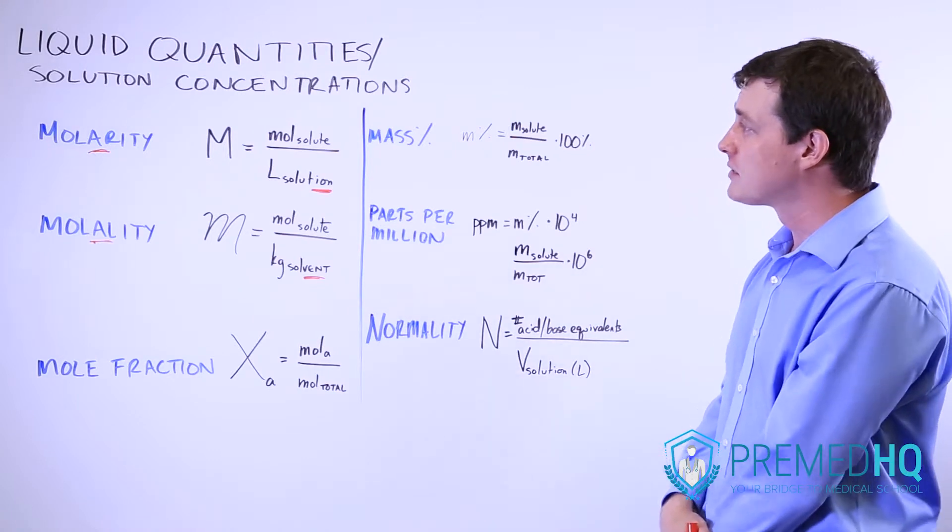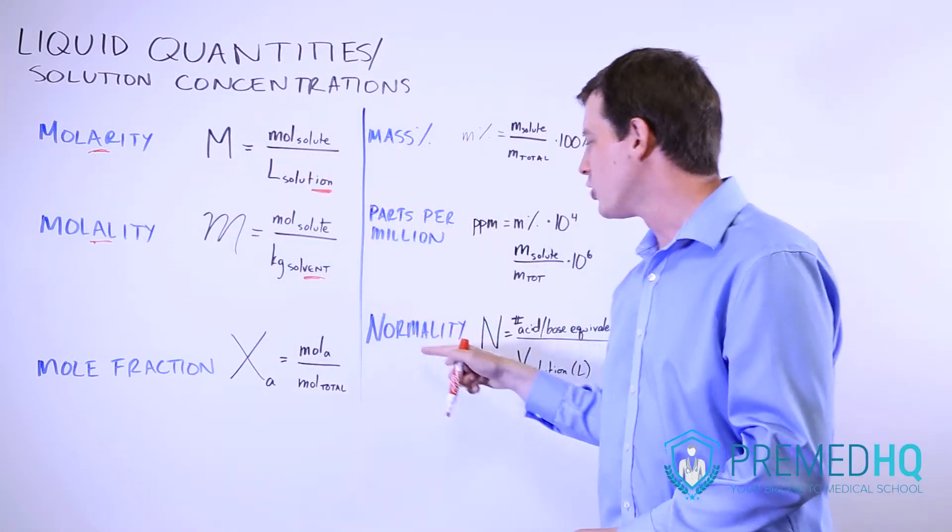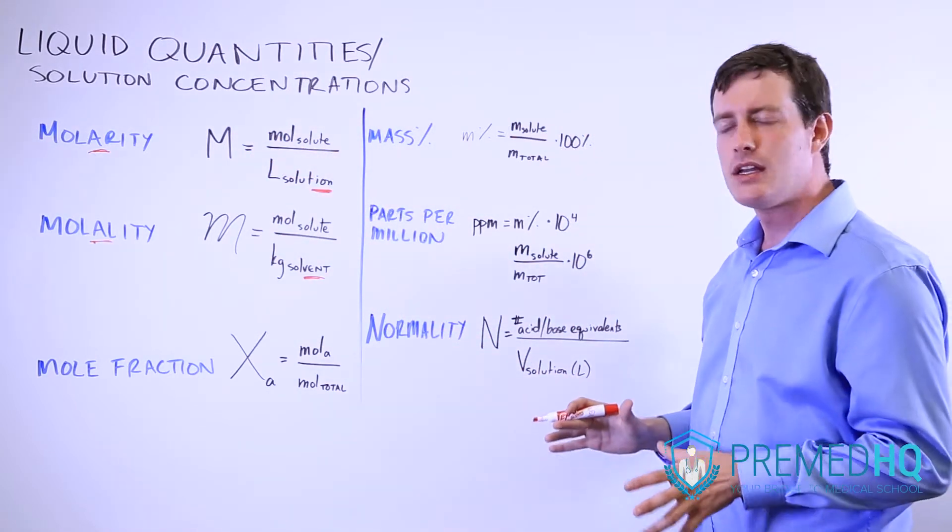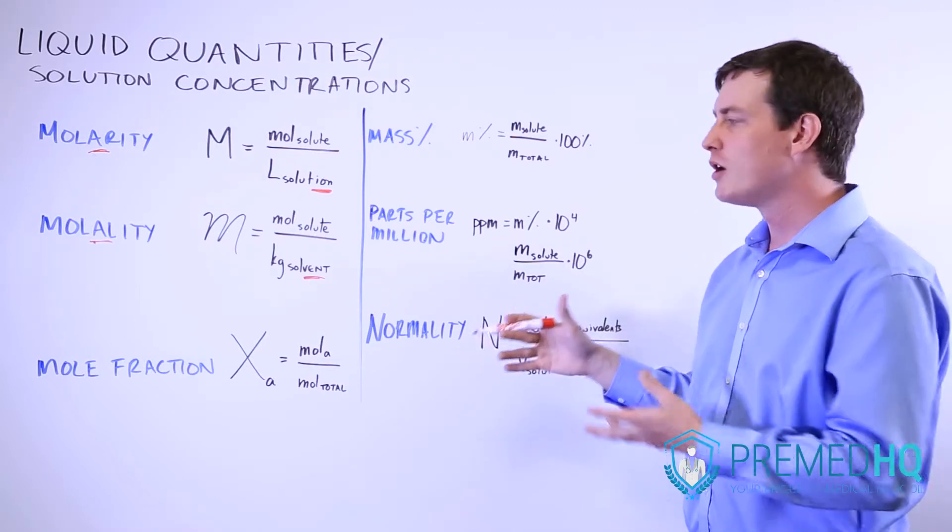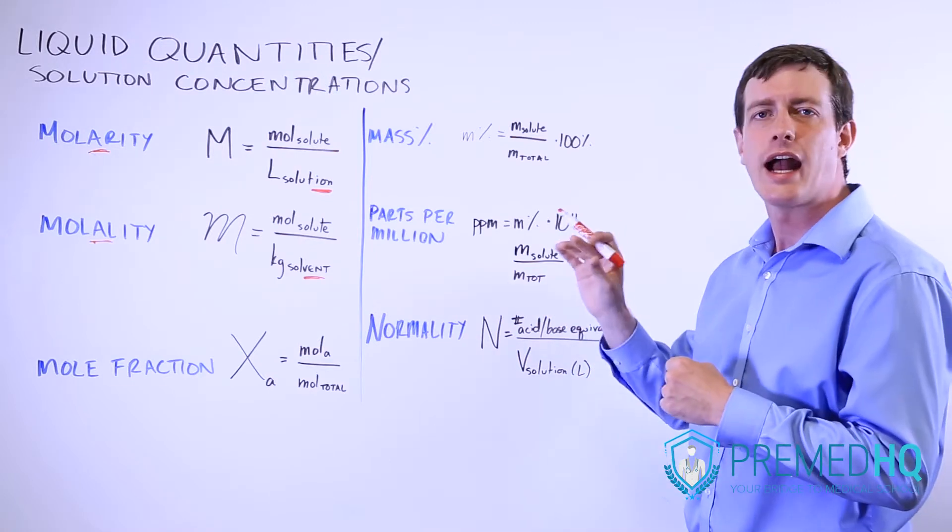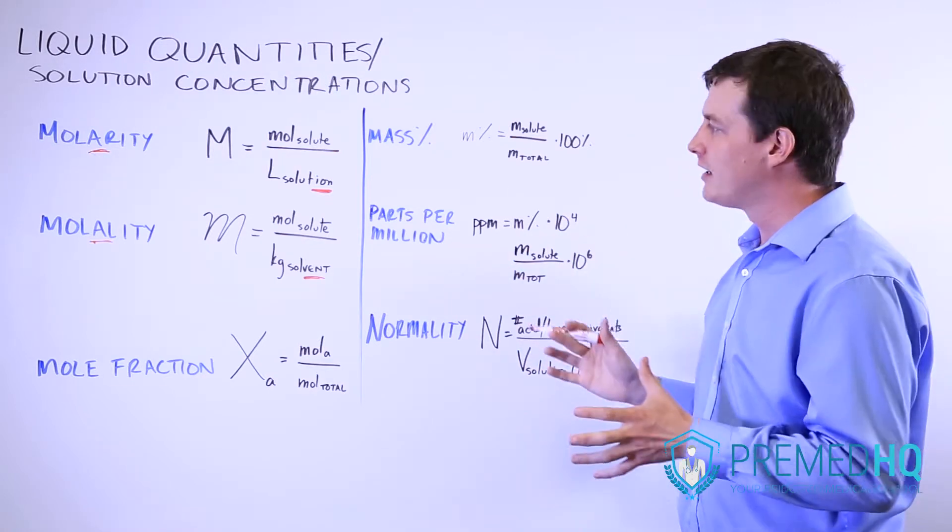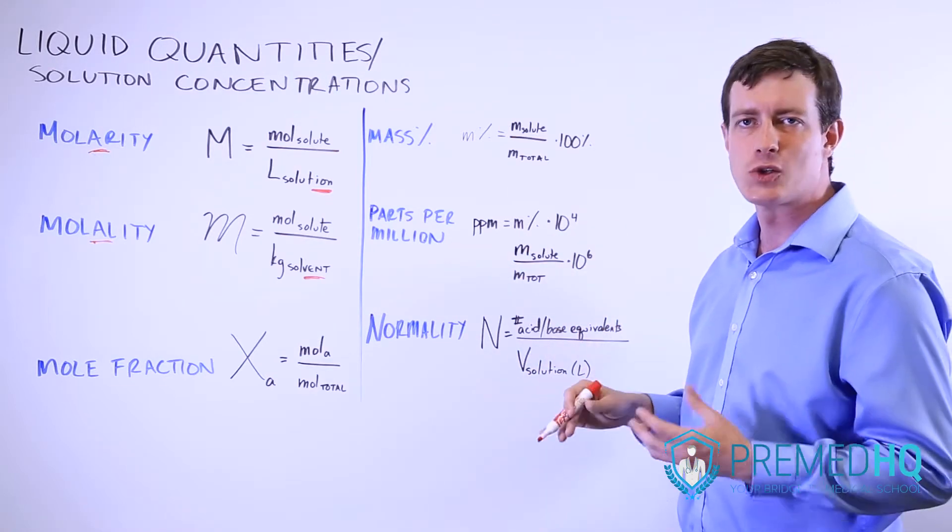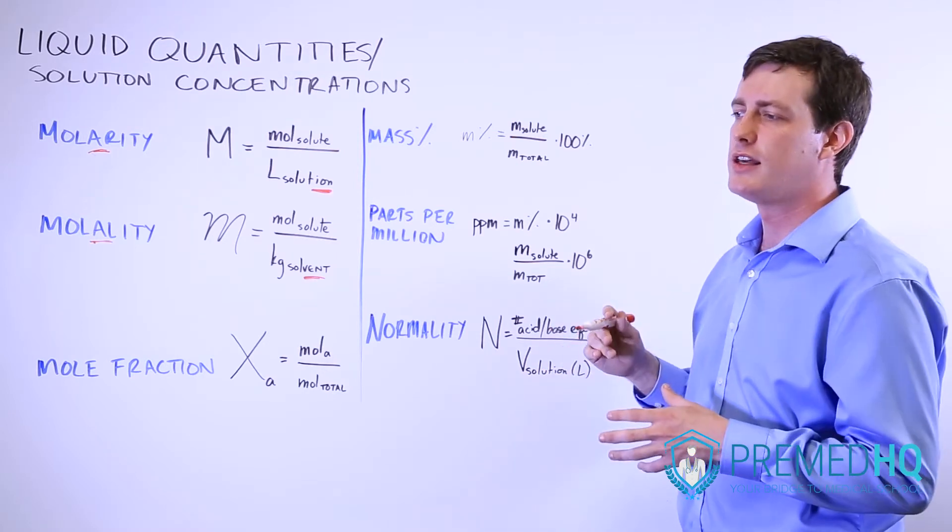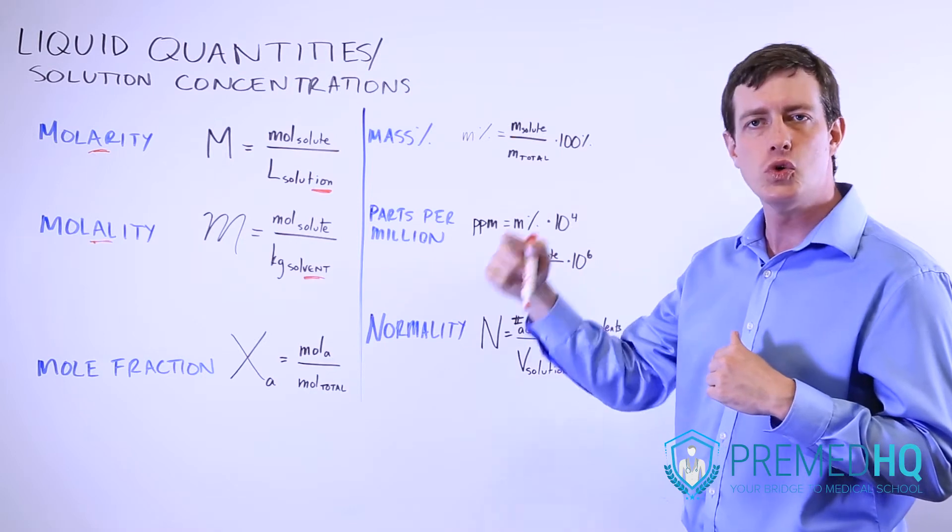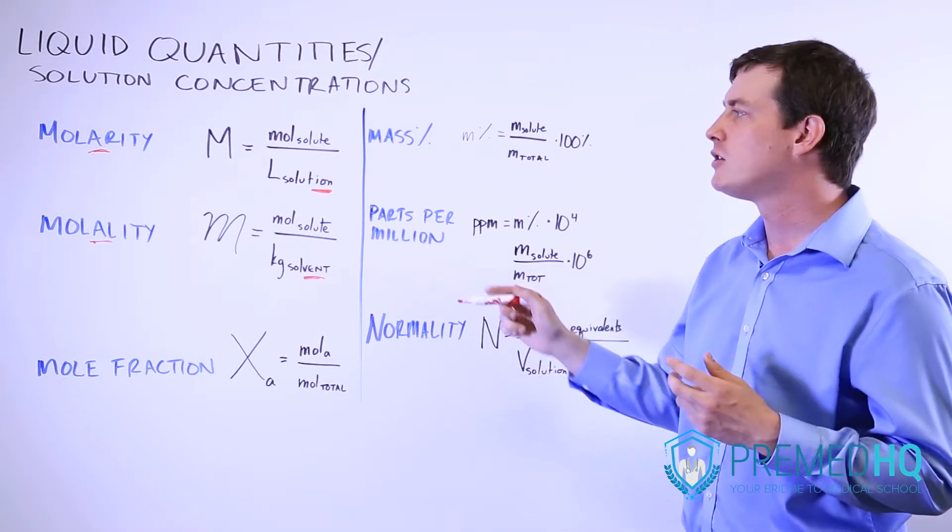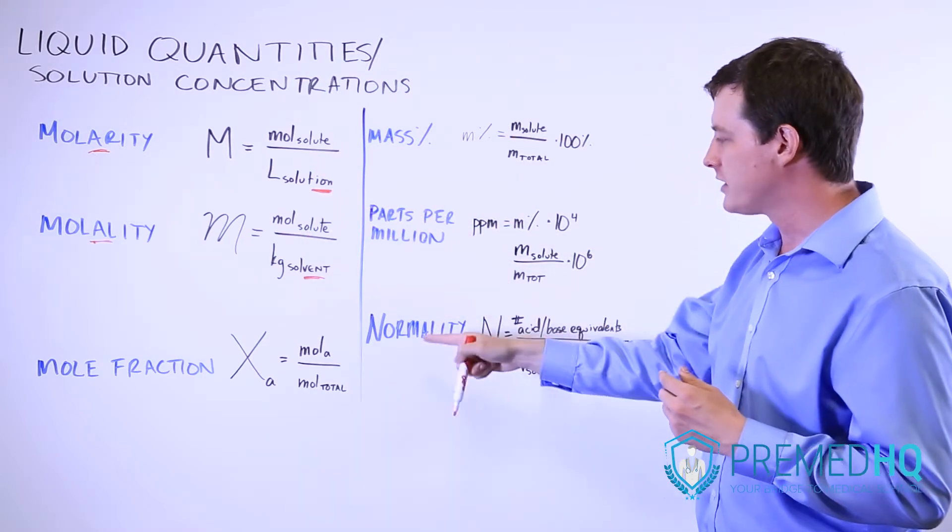So a lot of times molarity and normality will be the same because it's only something that donates one proton, or if it's a base it's something that only reacts with one proton. But in other cases with diprotic acids or with base particles that, let's say Ca(OH)2 where it yields two hydroxide groups, then you'll have to double the molarity to get to normality.